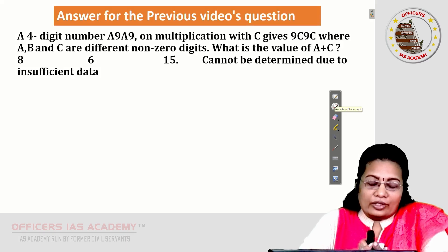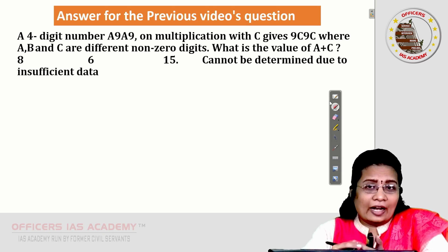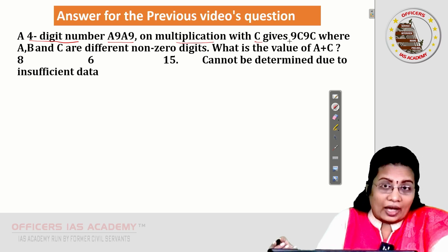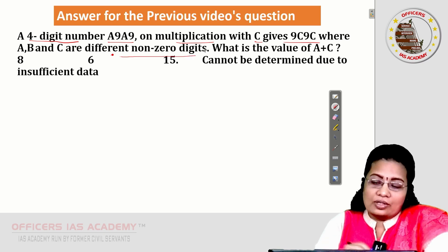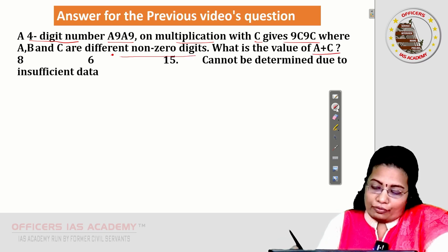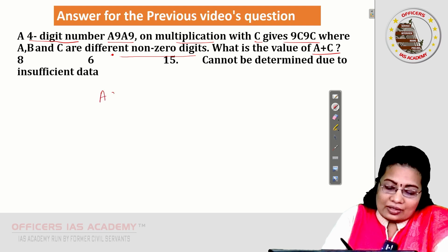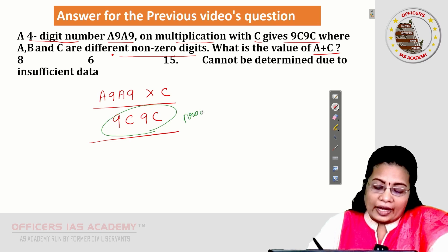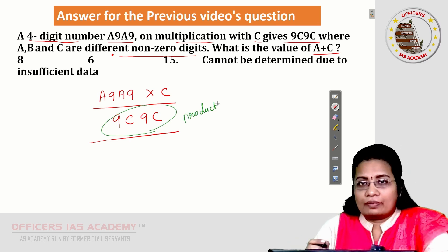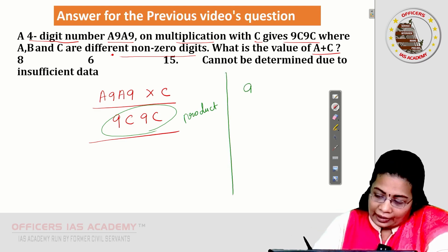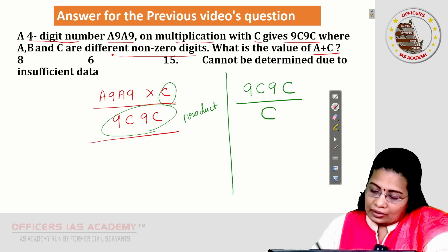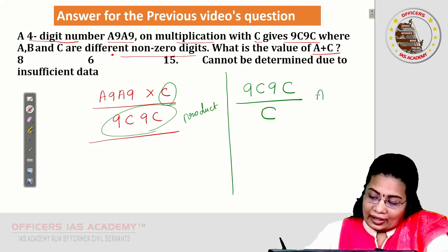Now, let us see the answer for the previous video's question. In the previous video, I had given one question. A 4-digit number A9A9 on multiplication with C gives 9C9C where A, B, C are different non-zero digits. What is the value of A plus C? Let me solve for you. Actually given is A9A9 multiplied by C, we got 9C9C as the result. Here, 9C9C is the product. Two numbers A9A9 and C. One is 4-digit number, another one is 1-digit number.